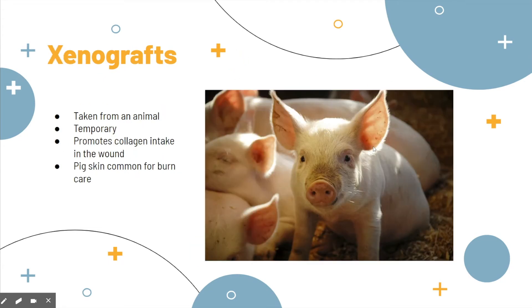Another type is xenografts, which use animal grafts. These are obviously temporary because it is not human skin. What is really beneficial about this is that it fuses extra collagen into the wound, and collagen really helps with the regeneration of the dermis. These are usually applied as the first surgical dressing because they absorb into the skin as the wound heals. Most commonly, pig skin is used for burn care.